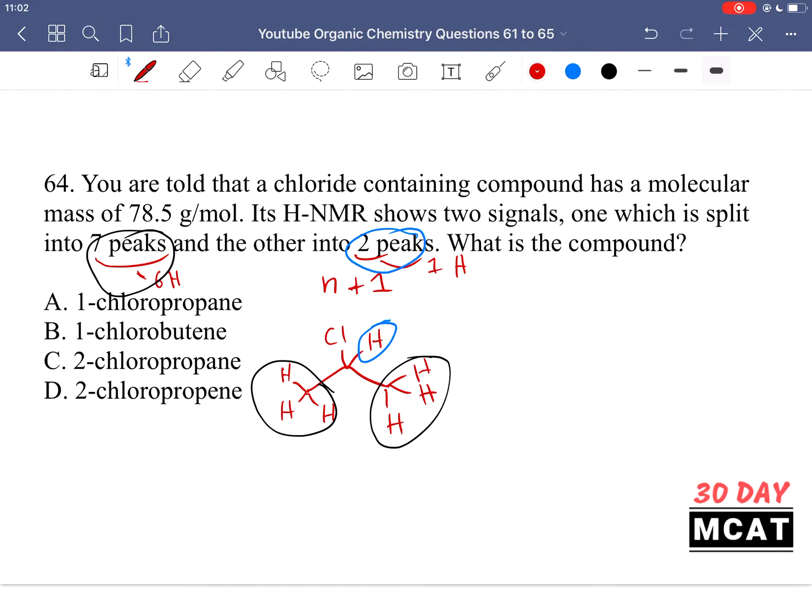Therefore, our answer to this question is going to be 2-chloropropane. So it's not a butene compound. There are three carbons. And you wouldn't get this type of relationship if you had it at the one position.